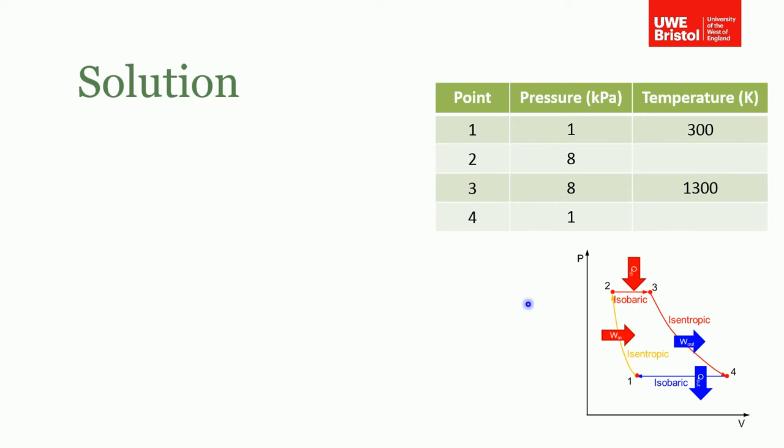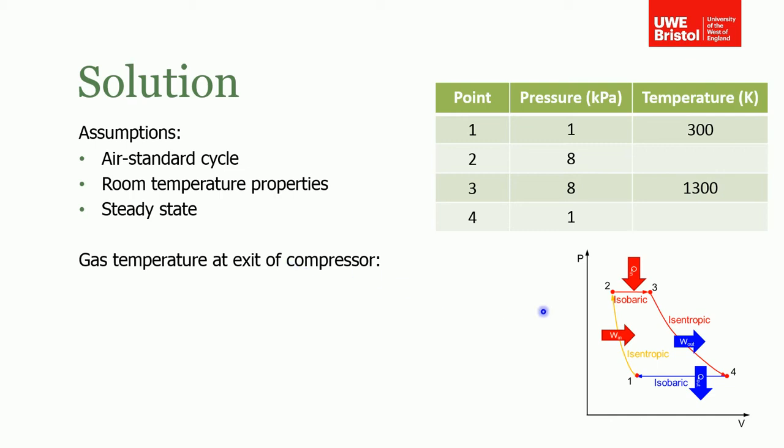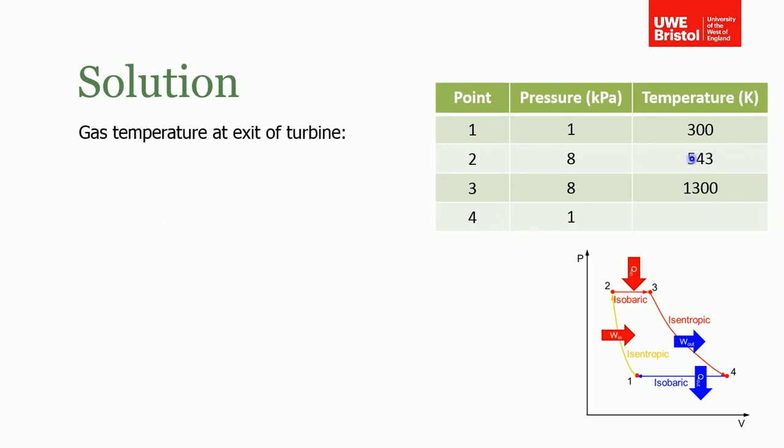You're asked to find the exit temperatures and also the back work ratio and the thermal efficiency. We're going to assume it's working on the air standard cycle with room temperature properties, and everything is steady state. The gas temperature at the exit of the compressor, by recognizing that this is a polytropic process—now we don't know anything about the volume, so we need to use the temperature-pressure relationship, which is this. We know T1, we know the ratio P2/P1, and we can get gamma from the steam tables. Taking it as 1.4 and plugging all those numbers in, we end up with the exit temperature of the compressor at 543 Kelvin, which is easy enough to put in our table.